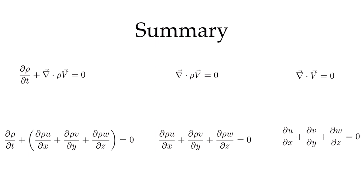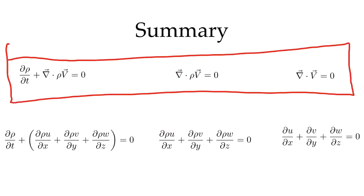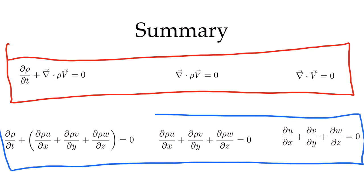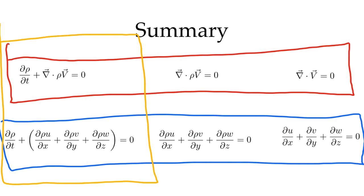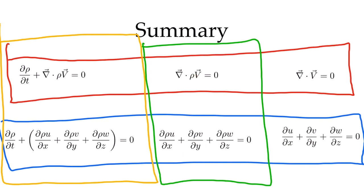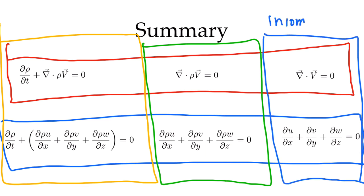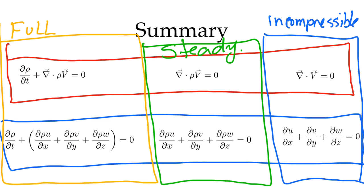To summarize, we have three forms of the conservation of mass equation in both vector and Cartesian notation: the full form for time-dependent flow with varying density, the steady form when the time derivative is zero, and the incompressible form — the simplest and most frequently used in this course — where ∇·V = 0. We'll see examples of this differential form of the conservation of mass equation in subsequent videos.